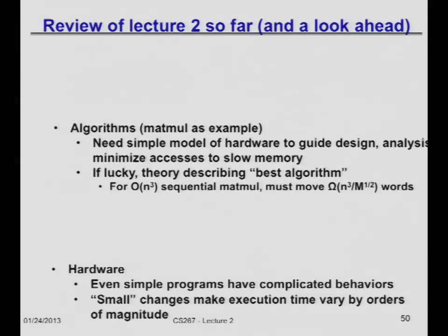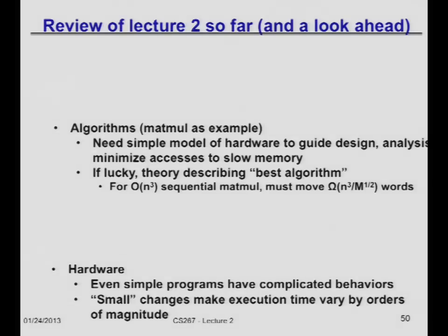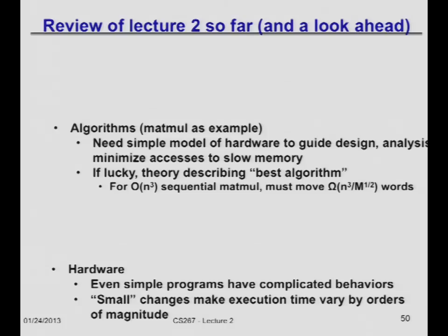The mental model was: all the cost that made those behaviors so complex was accessing memory — moving data between main memory and cache, or between different levels of cache. So what we want to do is organize our algorithms to minimize the number of accesses to memory. That's the most expensive thing these machines do by orders of magnitude.